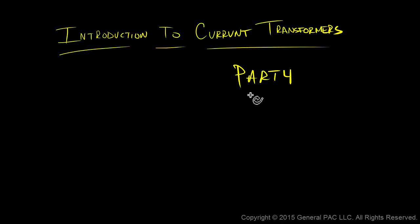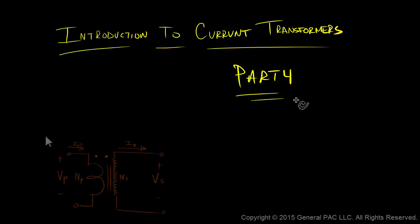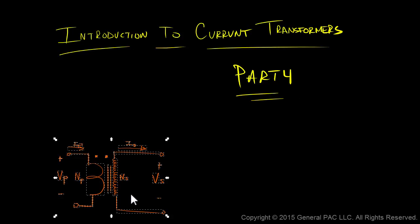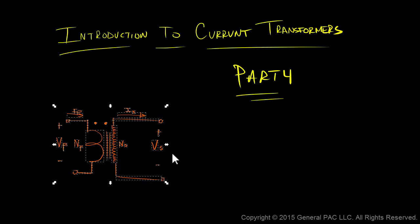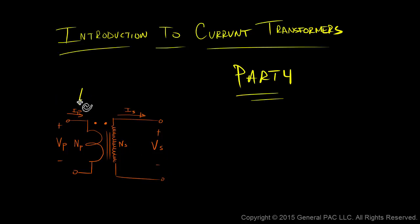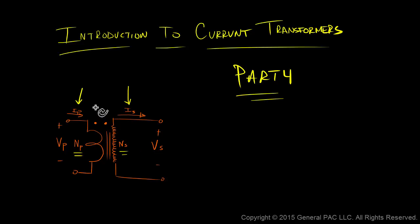Introduction to Current Transformers Part 4. In Part 3, we drew an ideal transformer and talked about the primary current, the secondary current, the number of primary turns, and the number of secondary turns, and defined the CTR, or the current transformer ratio.